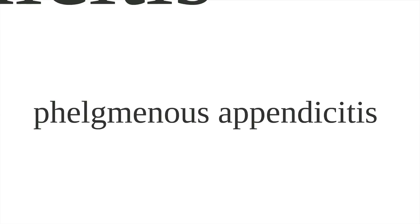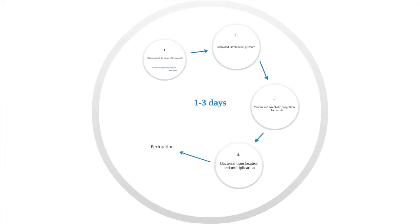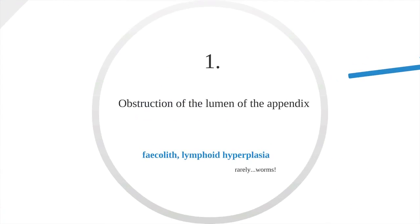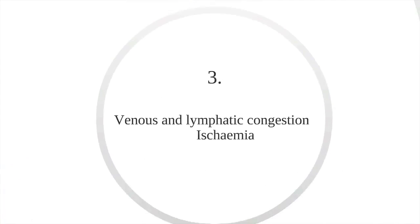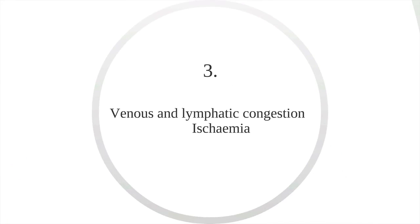Sometimes this is referred to as a grumbling appendix. In terms of the pathophysiology of obstructive appendicitis, the more common type, the story goes something like this. In the first place, there is obstruction of the lumen of the appendix, usually by a faecolith. This leads to an increase in intraluminal pressure and wall distension. Normal mucus secretion, however, continues from the appendix and eventually this leads to occlusion of lymphatic and venous supply. Finally, the arterial supply becomes compromised, leading to ischemia and necrosis.